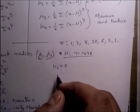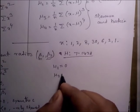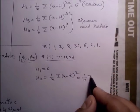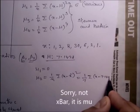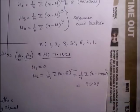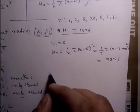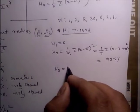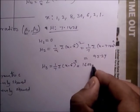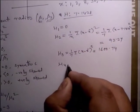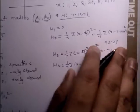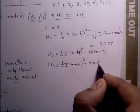Now calculate the moments. Mu_1 always equals 0. Mu_2 = (1/7) summation of (x minus 7.1428) squared = 93.27, which is the variance. Mu_3 = (1/7) summation of (x minus mean) cubed = 1600.74. Mu_4 = (1/7) summation of (x minus mean) to the power 4 = 39600.3.